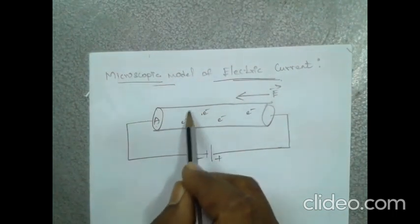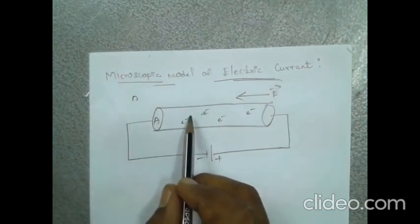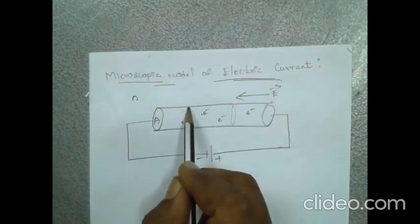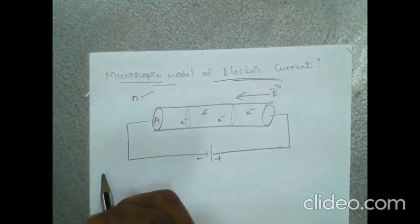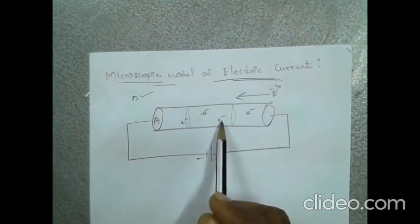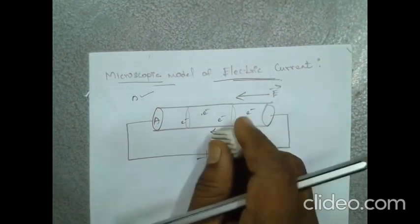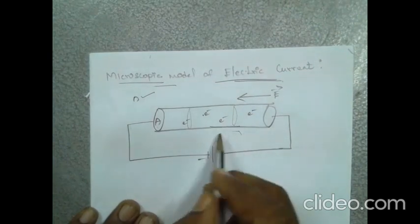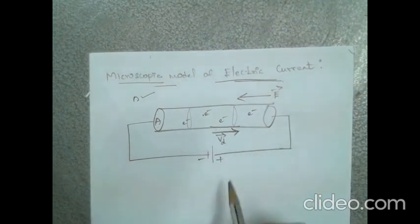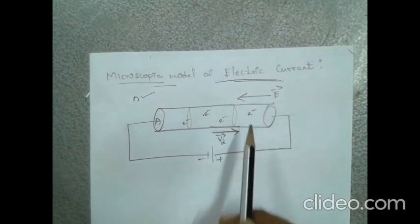In this conductor, there are a number of free electrons. Let small n be the number of free electrons per unit volume. When an electric field is applied in the conductor, the free electrons slowly drift opposite to the direction of the electric field. The electron movement is opposite to the electric field vector, while positive charges move in the direction of the field.